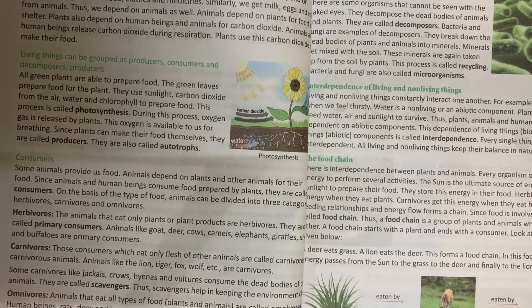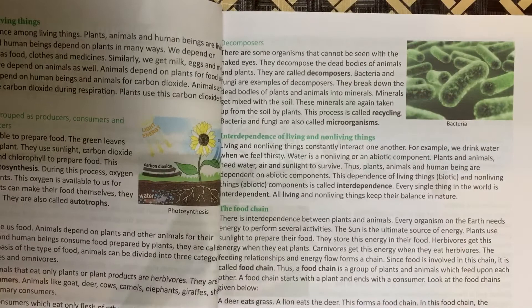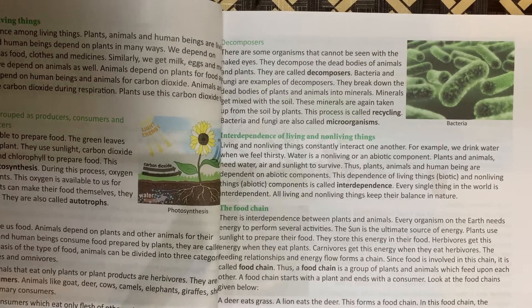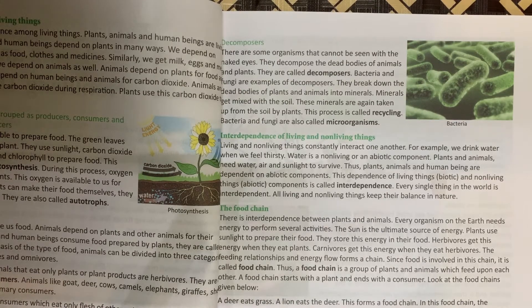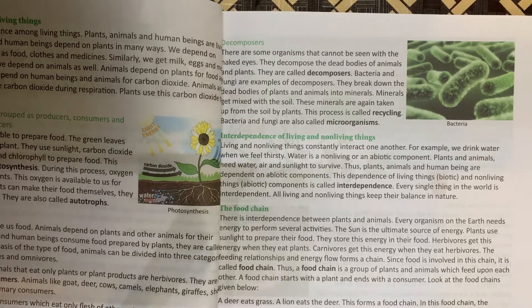Decomposers — fungi and bacteria — are small microorganisms which we can't see. They break down dead bodies and convert them into minerals and soil. This soil is absorbed again, completing a recycling process. They are very small microorganisms which we can't see.